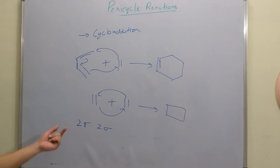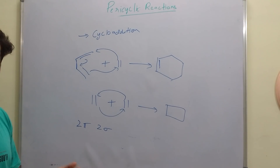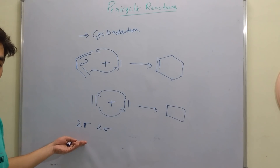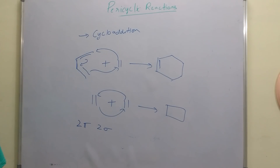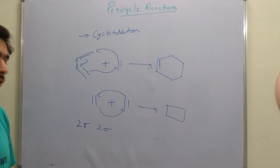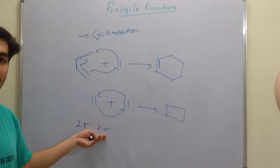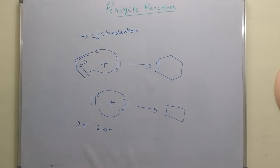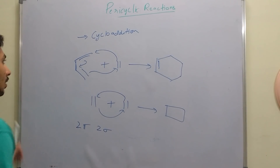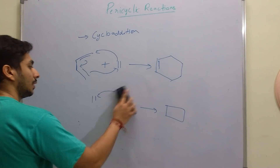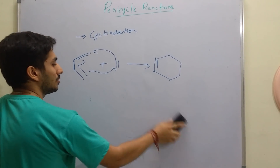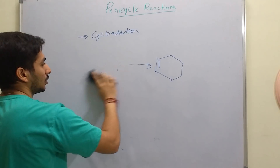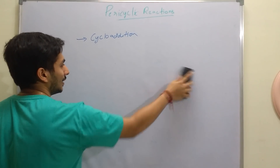To summarize: for electrocyclic reactions, it's loss of one pi bond and gain of one sigma bond. For cycloaddition reactions, it's loss of two pi bonds and gain of two sigma bonds. The third category is sigmatropic reactions. Generally, sigmatropic accounts for more than 30–40% of exam questions, and cycloaddition and electrocyclic account for about 30% each. Main questions generally come from sigmatropic.